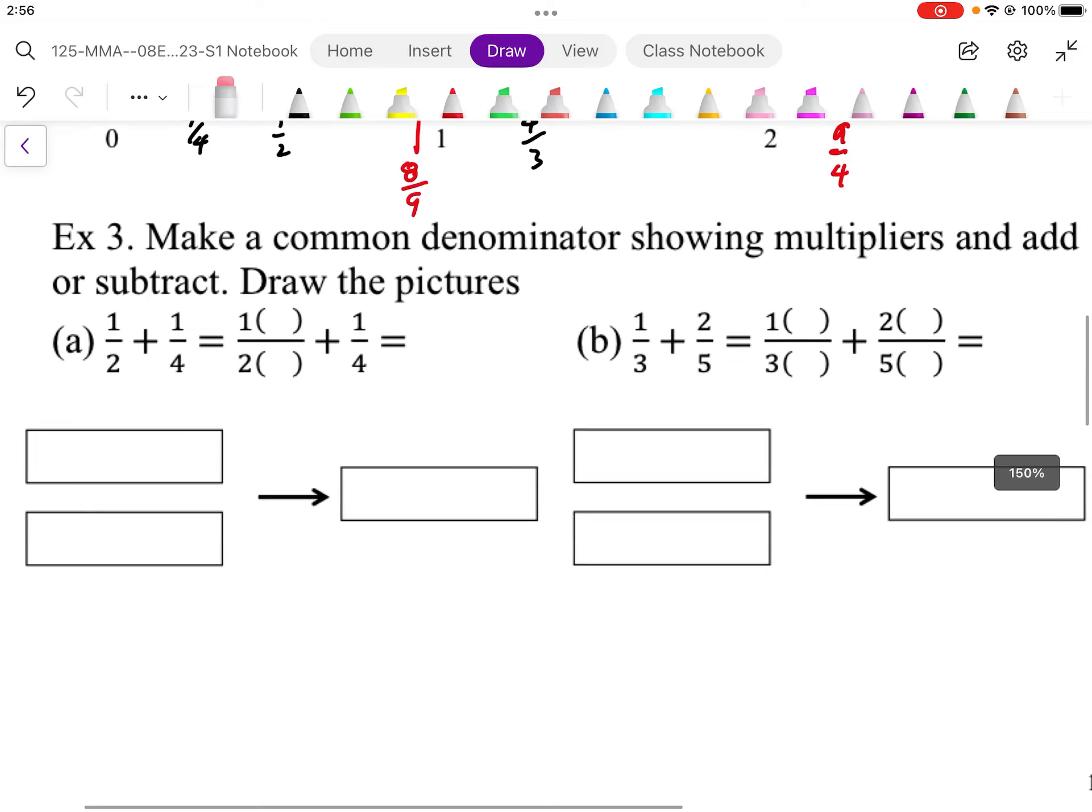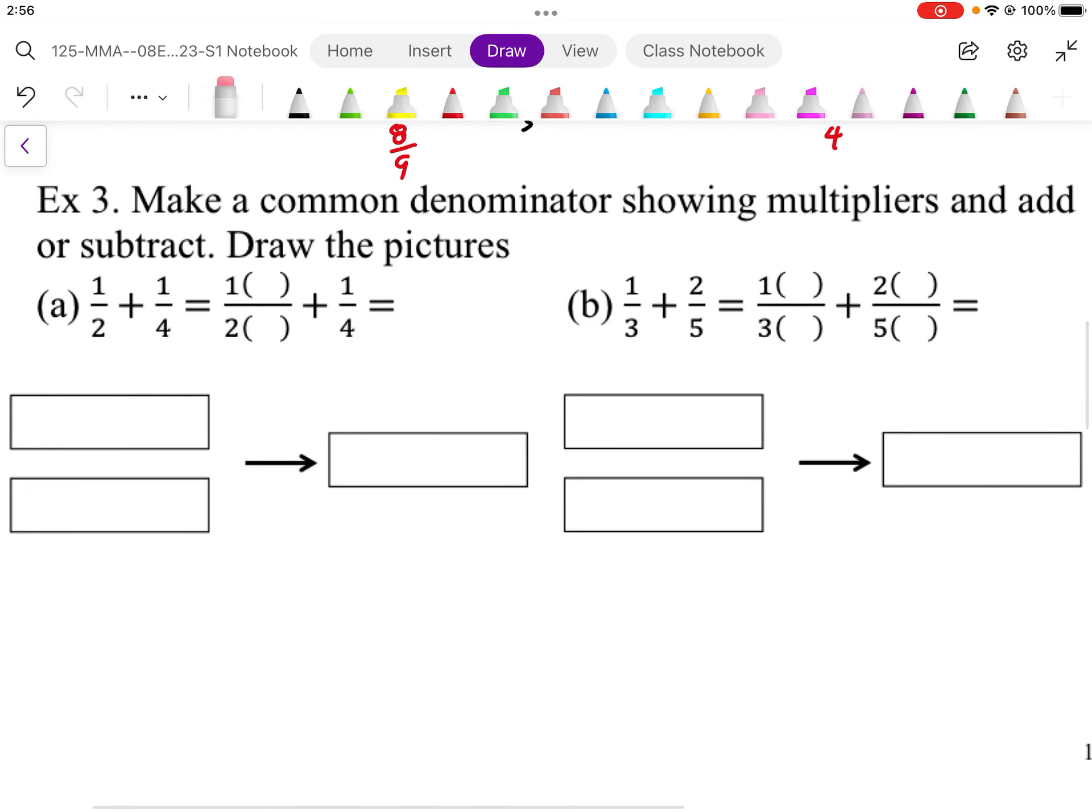For adding fractions or subtracting fractions, we need a common denominator. Or in other words, we need the same size fractions. So if I have a 1 half fraction, I'm starting off with a 1 half fraction here. And I have a 1 quarter fraction. Well, the problem with this is that those two pieces that I've shaded are different sizes. So what I need to do is make the 1 half into equivalent size pieces.